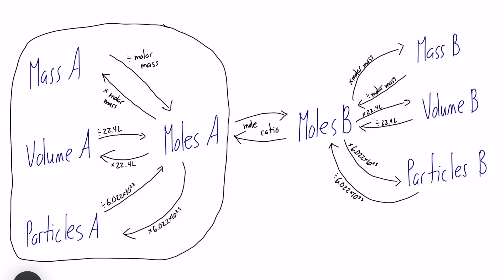...you will pretty much be using half of the stoichiometry flowchart, where you're just dealing with one substance, but different measurements, whether it's mass, volume, particles, or moles. What the stoichiometry flowchart takes into account is when you're trying to relate two different substances in a chemical reaction.